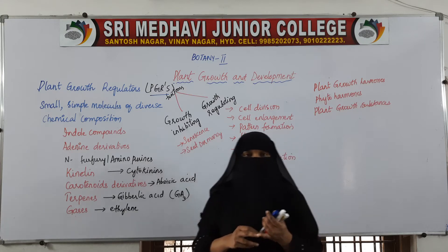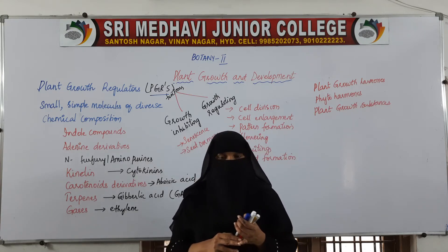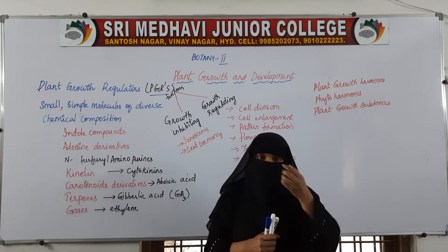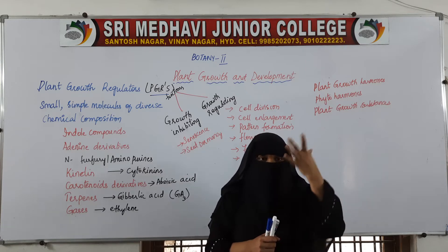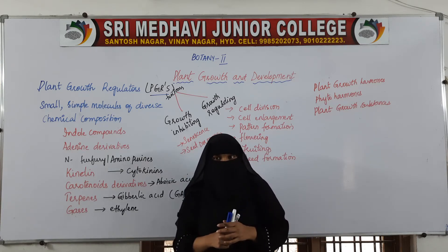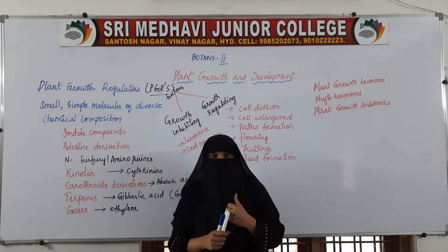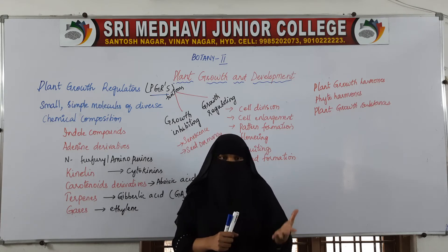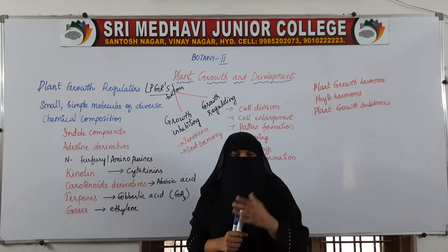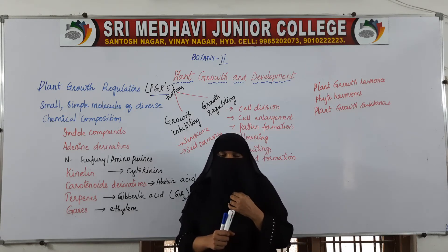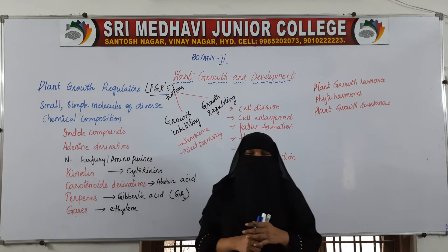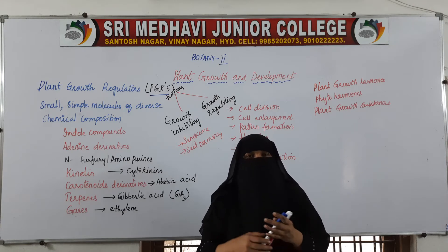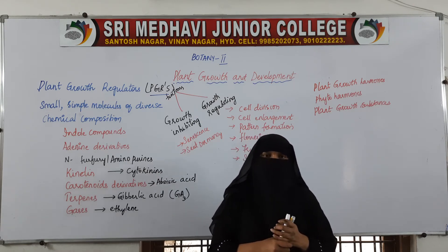In the bodies of animals and human beings, hormones are present to regulate growth. For example, the growth-regulating hormone affects a person's height. If produced in very little amount, the person suffers from dwarfism; in normal amount, normal height; in high amount, the person becomes giant-like — a condition called gigantism. Thyroxine helps the thyroid gland function; adrenaline is also there. Different hormones exist in the human body and in animals.